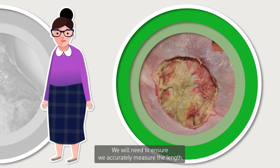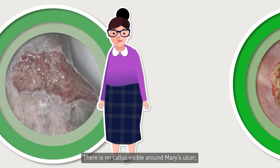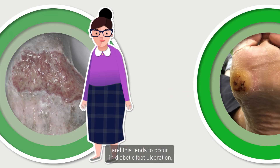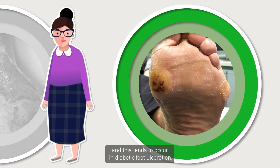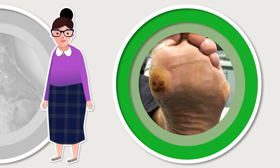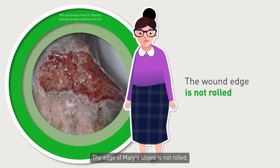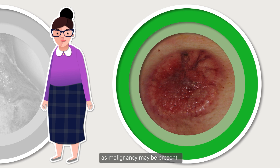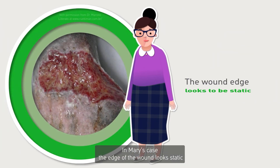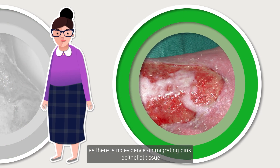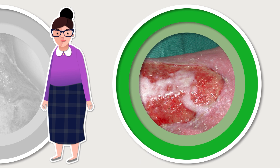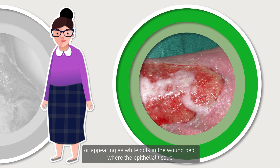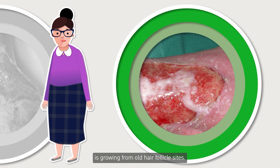We will need to ensure we accurately measure the length, width and depth of the ulcer. There is no callus visible around Mary's ulcer, and this tends to occur in diabetic foot ulceration, especially on the plantar surface of the foot. The edge of Mary's ulcer is not rolled; if this were the case, we would need to obtain medical advice as malignancy may be present. The edge of the wound looks static, as there is no evidence of migrating pink epithelial tissue spreading across the wound bed from the wound edges, or appearing as white dots in the wound bed where epithelial tissue is growing from old hair follicle sites.